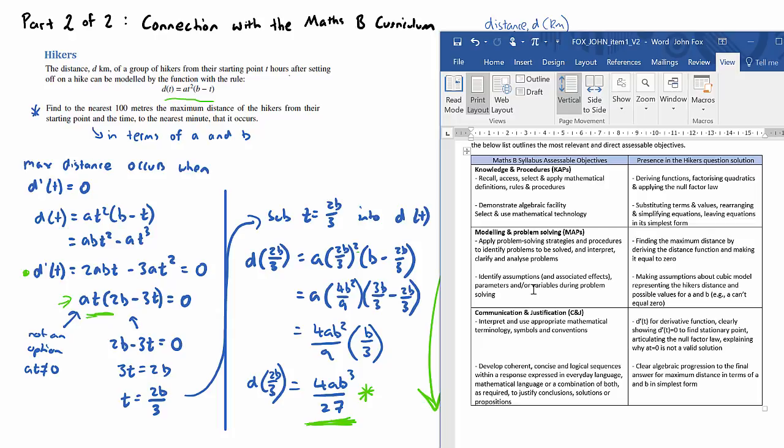And then finally, for communication and justification, to have clear working that the derivative function, for example, could either be d on dt or d dash t, that's for the derivative function, and also articulating that we're factorizing and using the null factor law, that there's two solutions. And then I have also added coherent, concise, logical sequences. So I like to see very clear sequences in the algebraic techniques to get to our end most simple and elegant answer. So these are the general assessment objectives that I've listed that are important to see in a student's result for the hikers question.